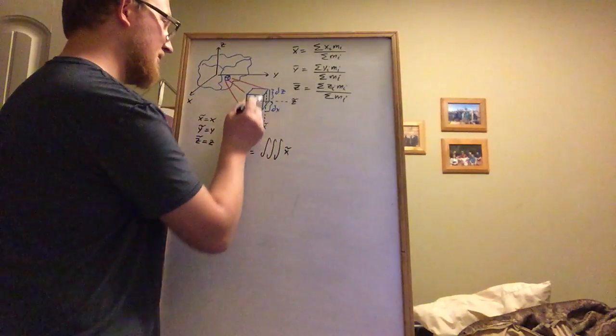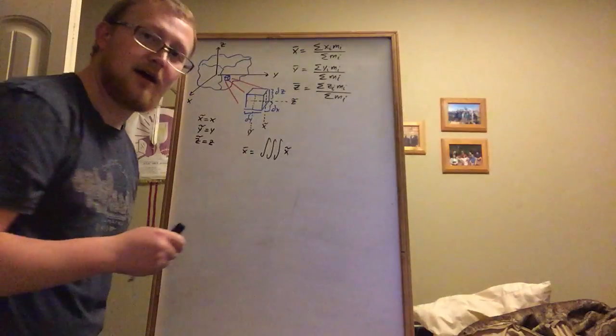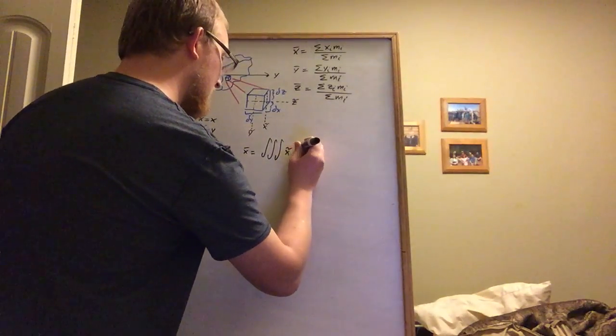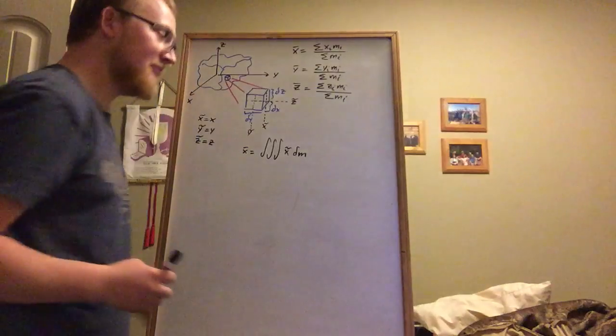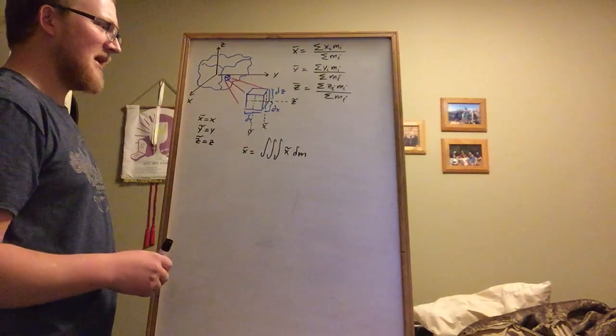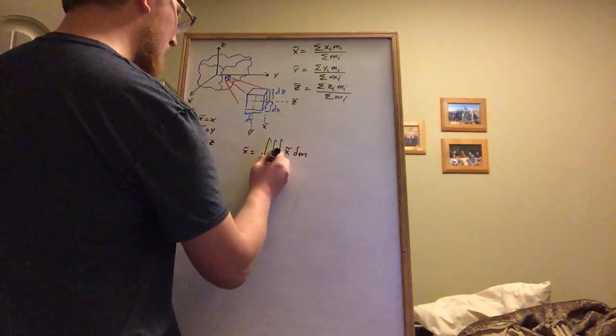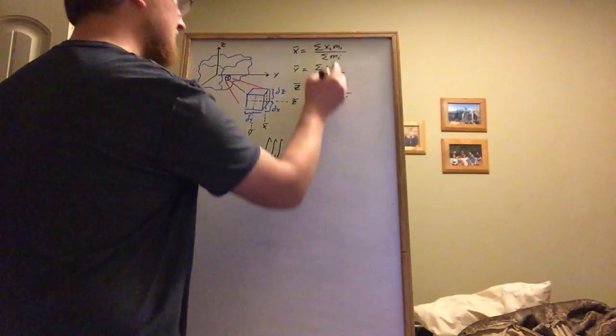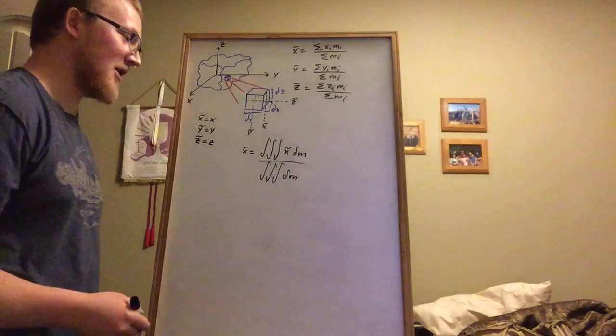In other words, the center of mass of this small cube times its small chunk of mass. And then we're going to go ahead and divide it by the triple integral of the mass, just because we're summing over the mass here as well.